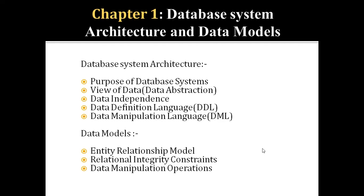We will now start Chapter 1: Database System Architecture and Data Models. The points we are going to cover include: the purpose of database systems, data abstraction (also called the view of data), data independence, data definition language, and data manipulation language.